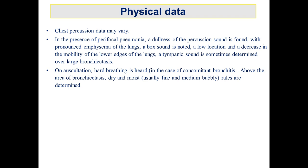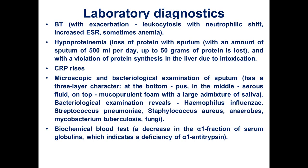Chest percussion data may vary. In the presence of peripheral pneumonia, dullness of percussion sound is found. With pronounced emphysema of the lungs, a box sound is noted, low location and decreased mobility of the lower edge of the lungs. A tympanic sound is sometimes determined over large bronchiectasis. On auscultation, hard breathing is heard, and in the case of concomitant bronchitis above the area of bronchiectasis, dry and moist, usually fine and medium bubbly rales are determined.